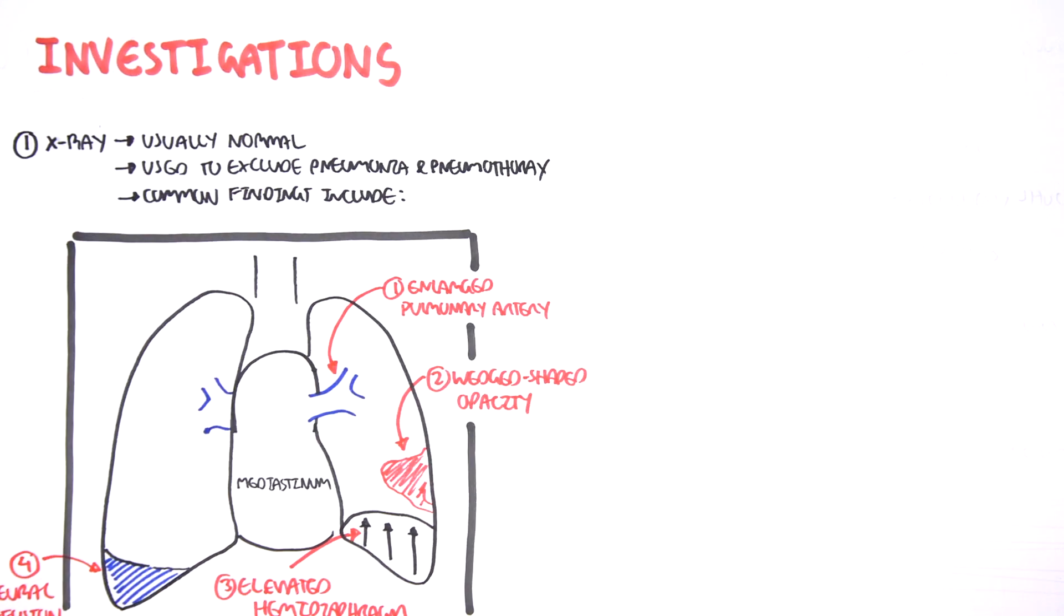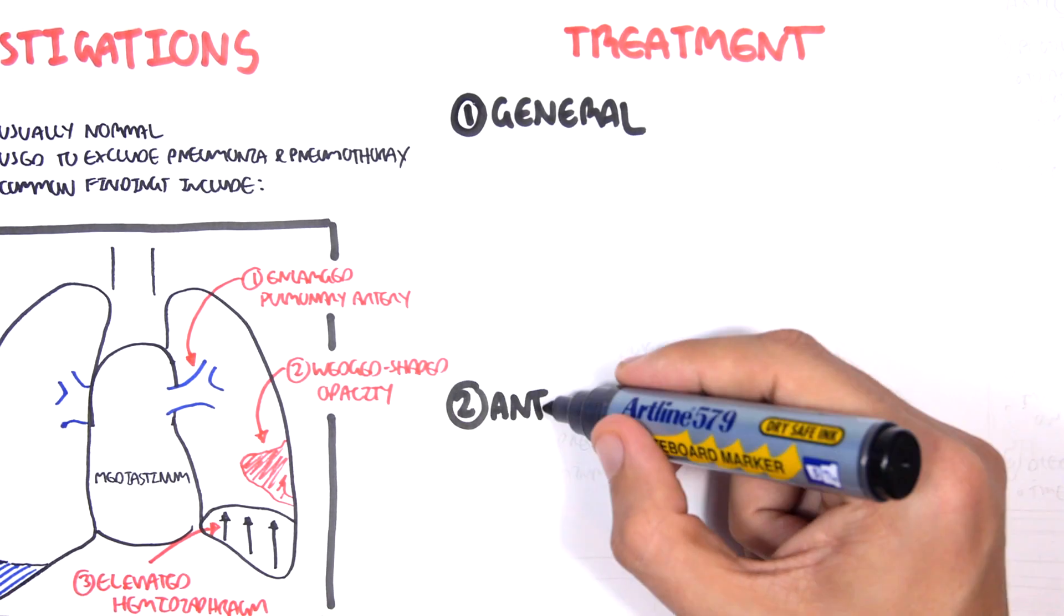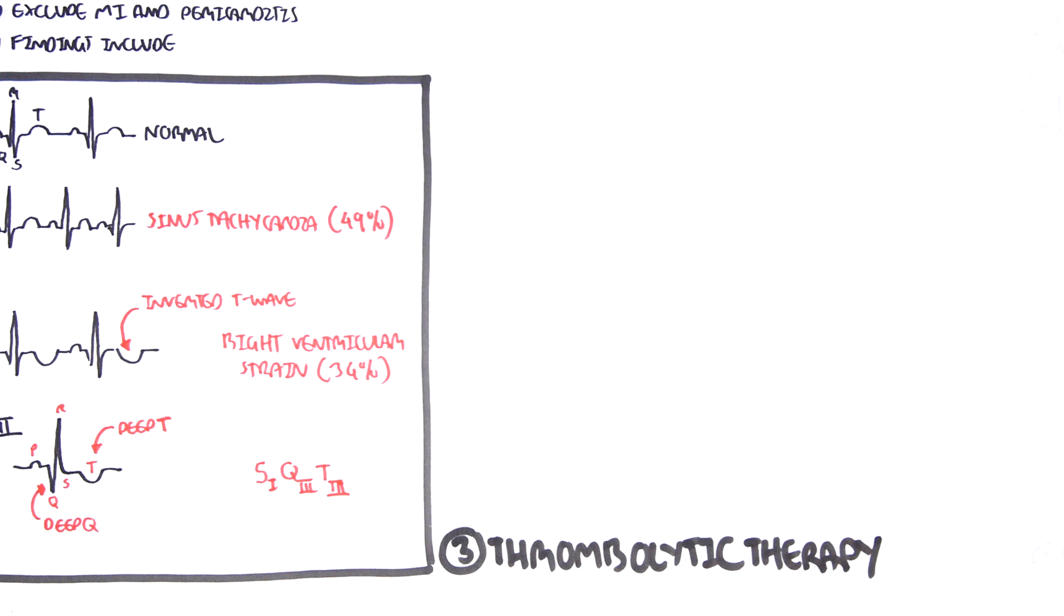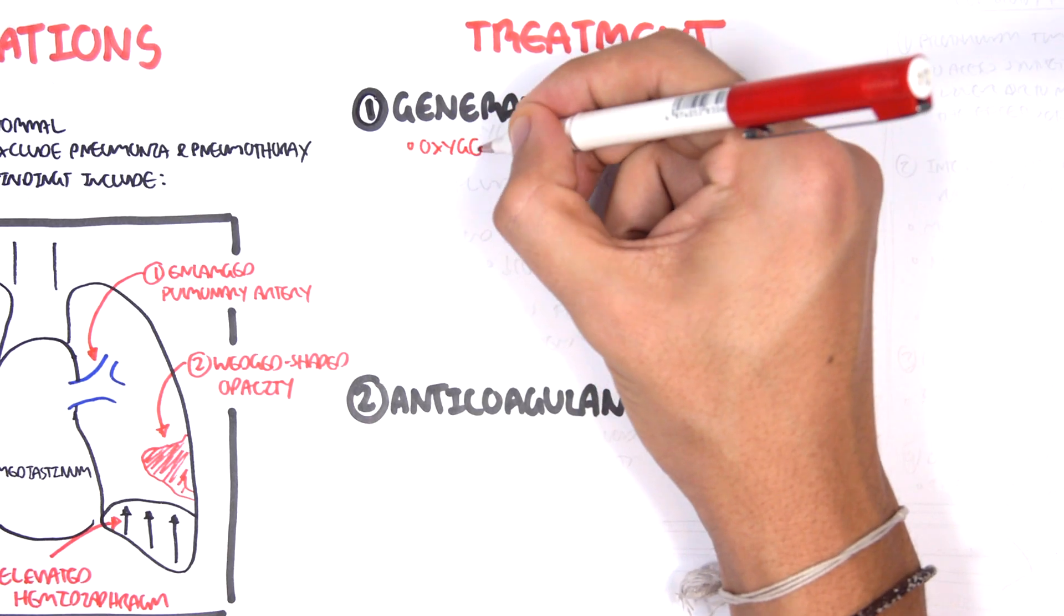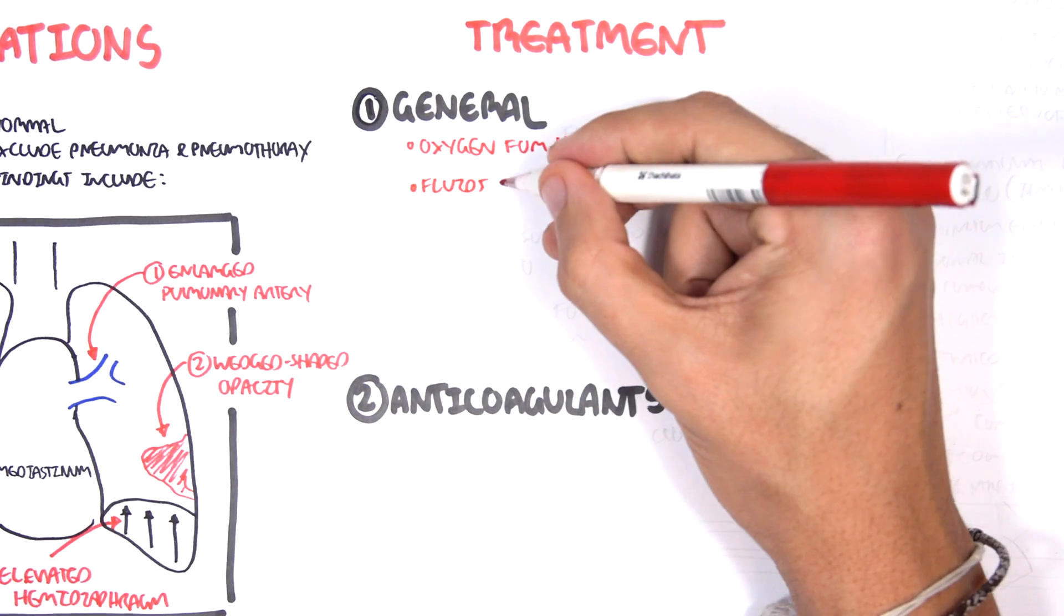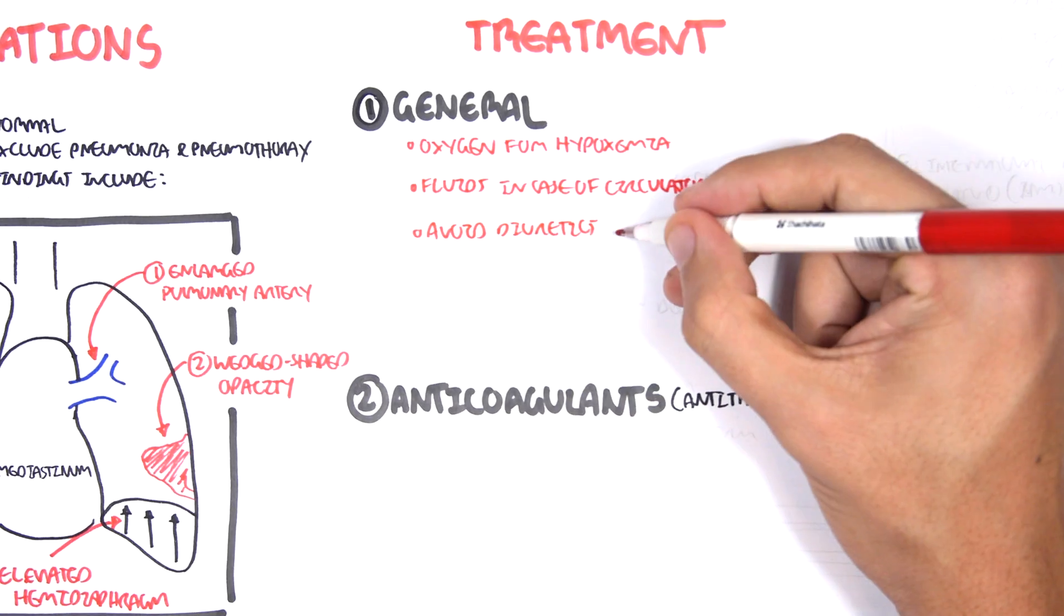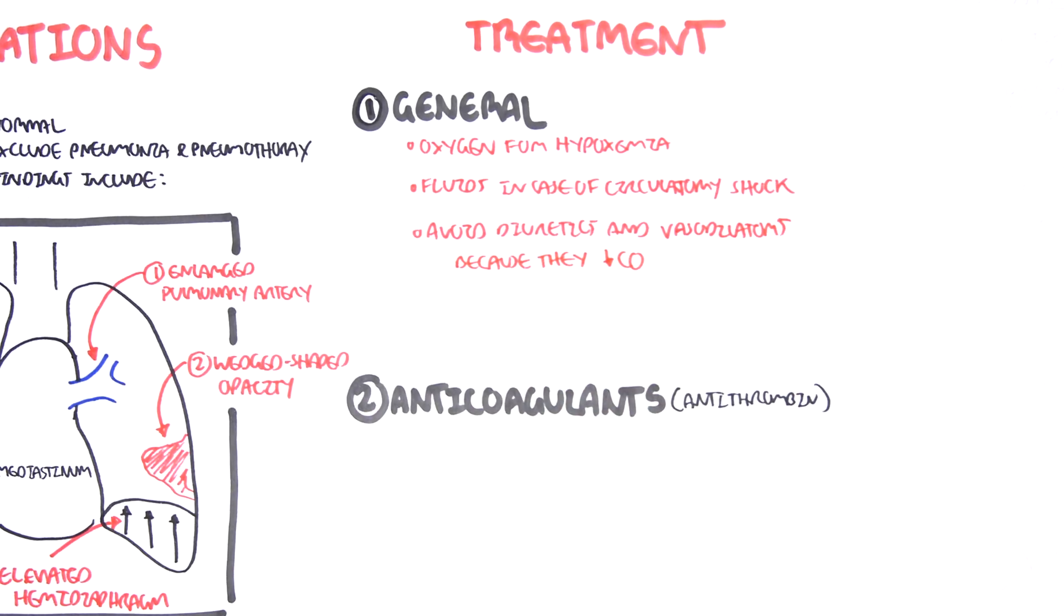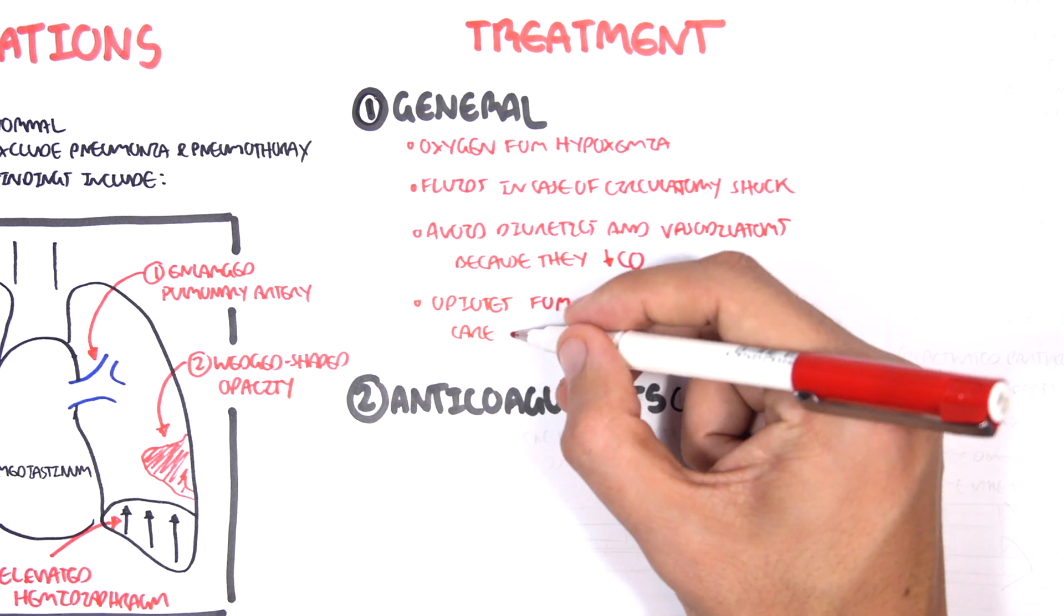Now let's look at the treatments. So treatments can be divided into three parts: general, anticoagulant also known as antithrombin, and thrombolytic therapy. Thrombolytic therapy is essentially fibrinolysis. For general treatment, you give oxygen for hypoxemia. You give them fluids in case of circulatory shock and you have to avoid diuretics and vasodilators because these drugs decrease cardiac output and in pulmonary embolism you usually already have a decrease in cardiac output so it's dangerous. You can use opioids for pain but you have to be careful of hypotension.